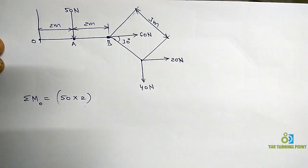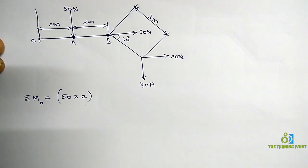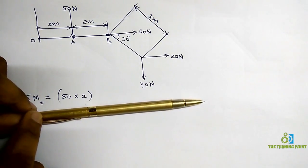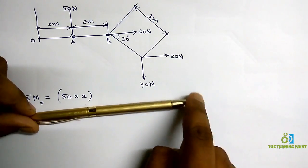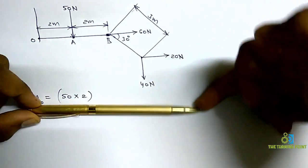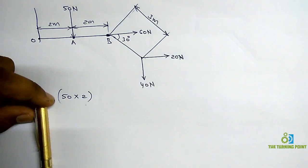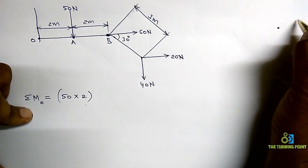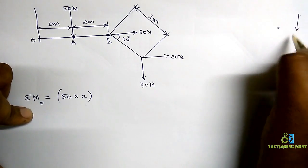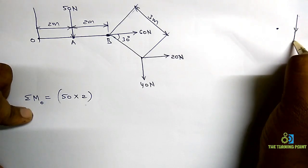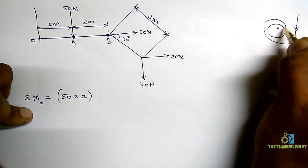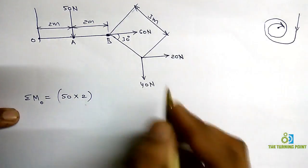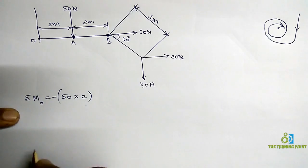To find whether it is clockwise or anticlockwise: the moment center is O, and we are applying force at A. When I apply the force at point A in this direction, the object rotates clockwise. In the direction of force, circling the moment center gives clockwise — so that is negative.